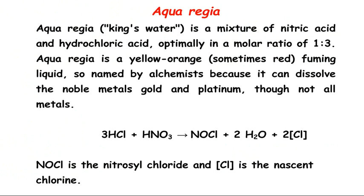The last topic on HCl is aqua regia, known as the king's water. It is a mixture of nitric acid and hydrochloric acid in a ratio of 1:3. Aqua regia is a yellow-orange, sometimes red, fuming liquid named by alchemists because it can dissolve noble metals like gold and platinum.